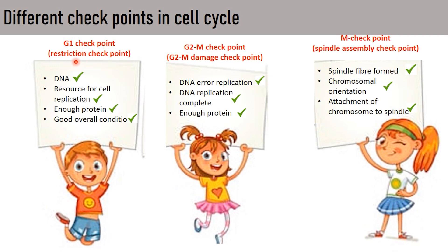There are different checkpoints in the cell cycle. The first is the G1 checkpoint, also known as the restriction checkpoint. Here the cell checks for proper DNA content, availability of resources for DNA replication, sufficient protein for the process, and whether the overall environment is suitable, before giving the go-ahead signal. At the G2/M checkpoint, the cell again checks for errors in DNA replication, whether DNA replication is complete, and whether there are enough proteins to move forward to the next phase.